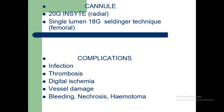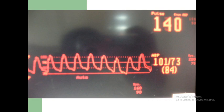Complications of an arterial line include infection, thrombosis, digital ischemia (reduced blood supply to the fingers), vessel damage, bleeding, necrosis (death of tissue), and hematoma. On the display, you can see the blood pressure waveform. If the dicrotic notch has nearly disappeared, this indicates the system is non-compliant.